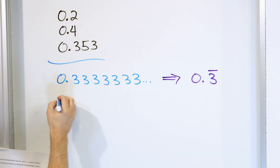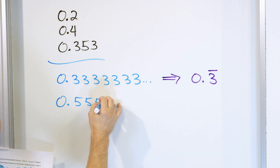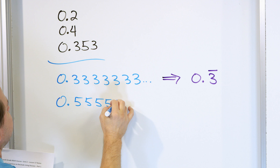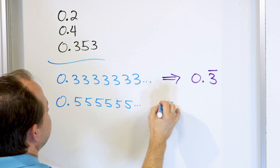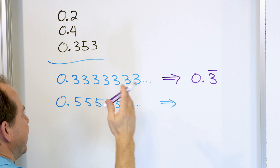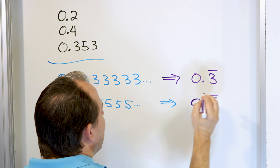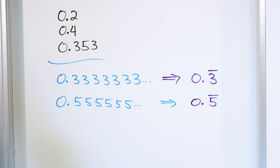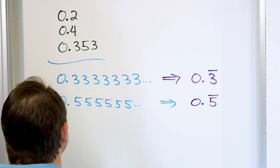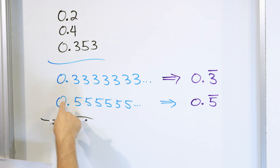As another example, what about 0.555555...? The five is the repeating digit, so you just write 0.5 with a bar over the five. That tells you the five goes on and on forever. But there are other variations where the digits repeat but not quite so simply.